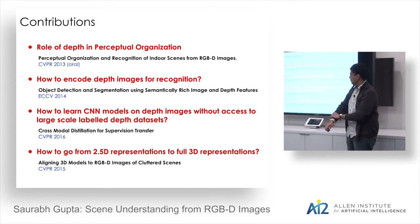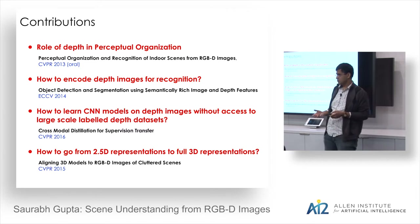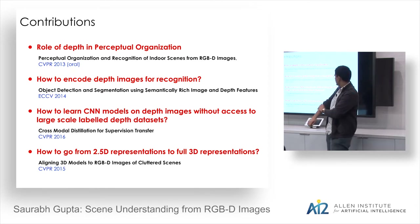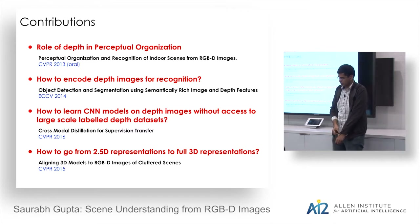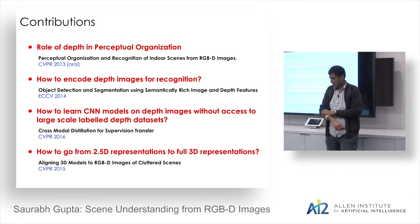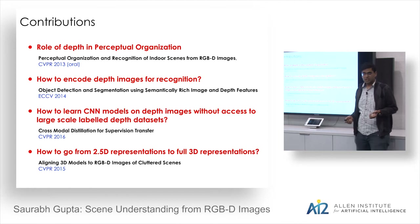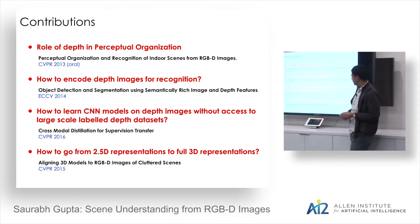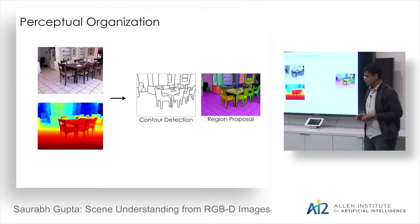I'll pick out four key nuggets from my work. First: what is the role of depth in perceptual organization — how can depth improve contour detection and region proposal generation? Second: how do you encode depth images optimally for recognition? Third: how do you train CNN models on image modalities like depth for which you lack labeled data? And fourth: how do you go from a 2.5D to a full 3D representation?